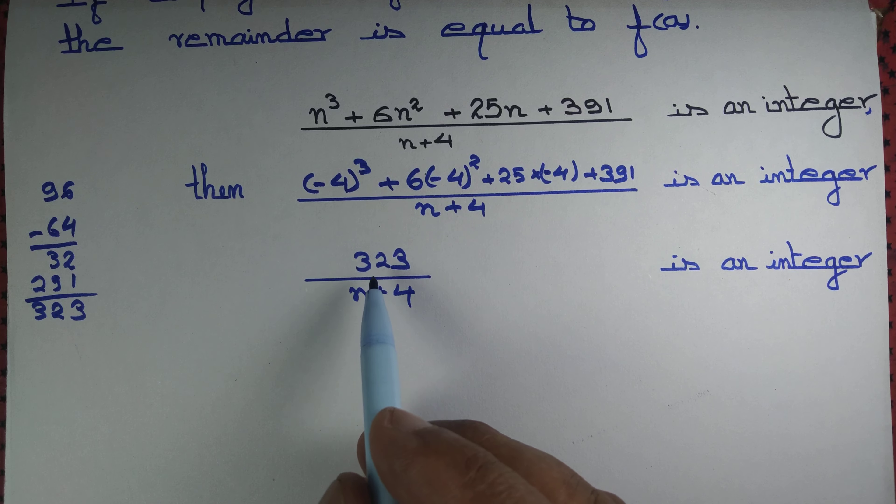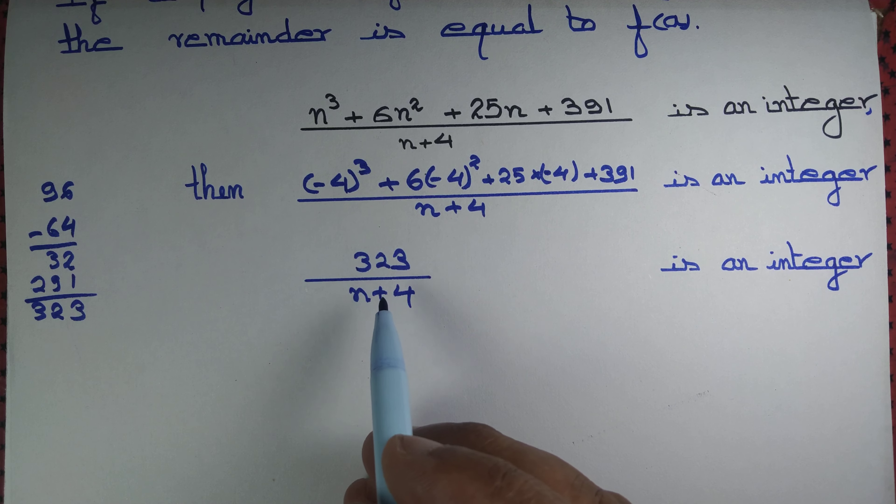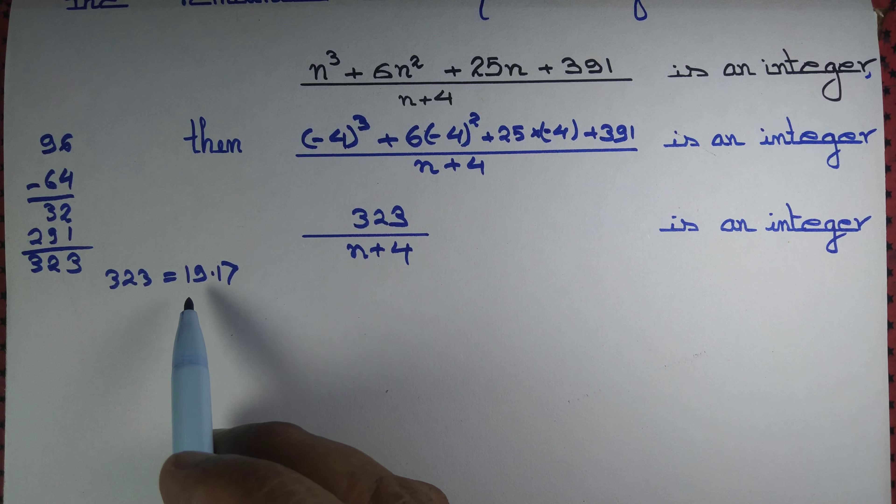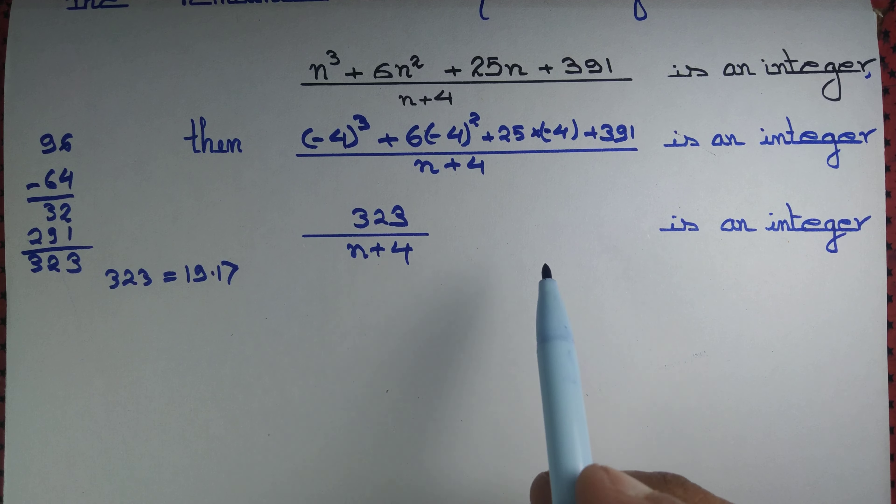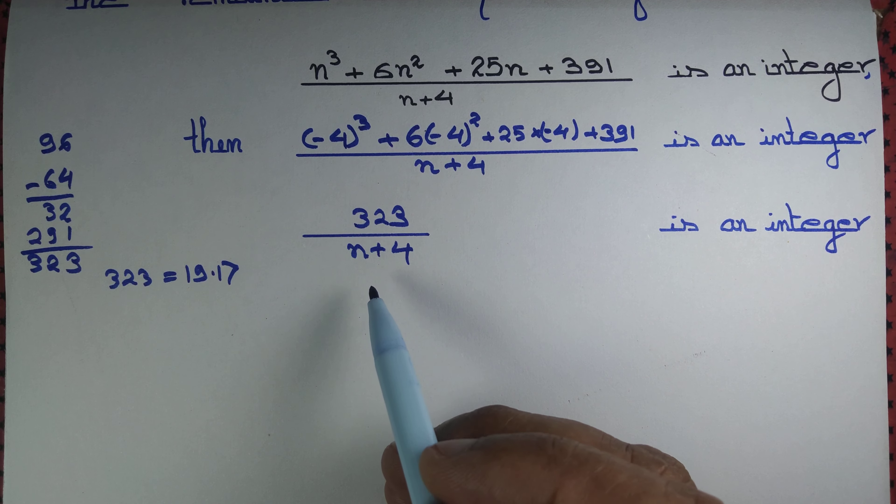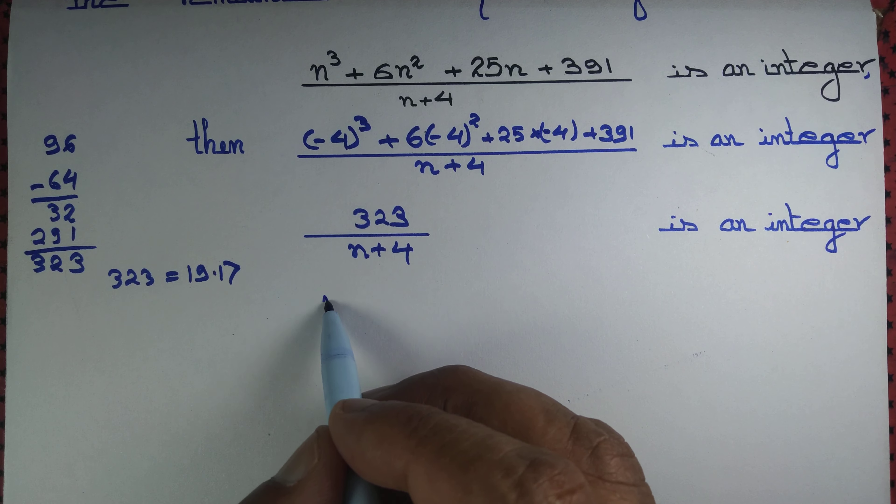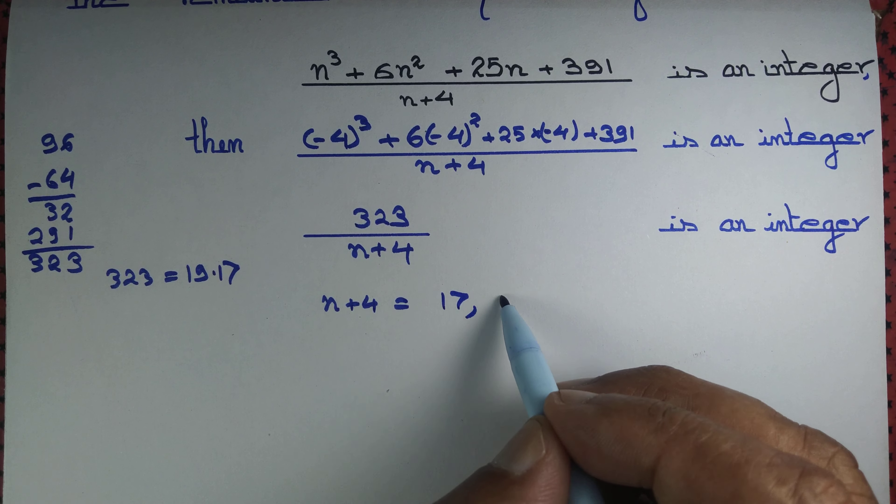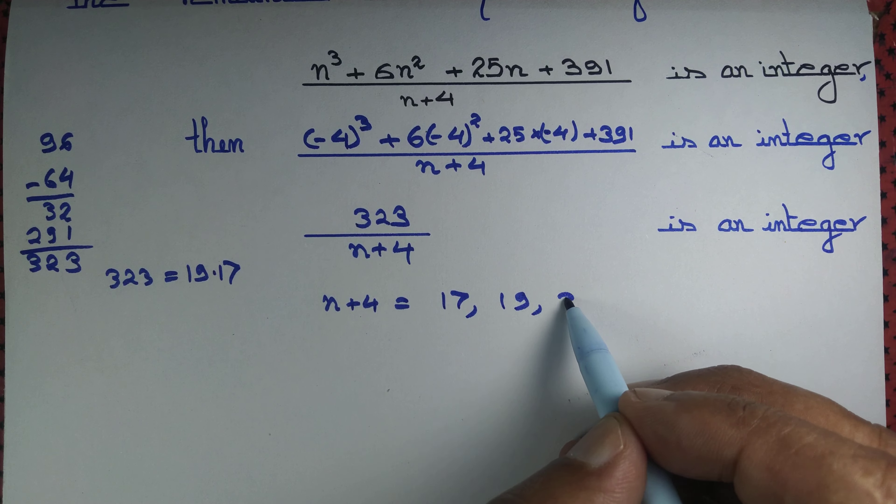Now we know that 323 is not a prime, it's a composite. In fact 323 equals 19 into 17. Now if this expression is an integer, then it must happen that n plus 4 is a factor of 323. So n plus 4 equals 17, 19, or 323.